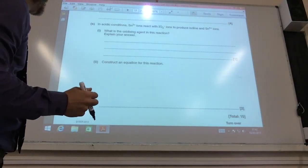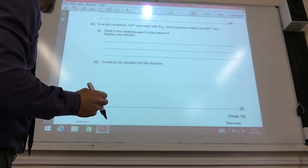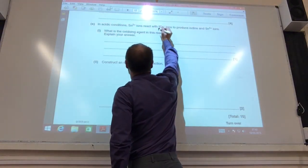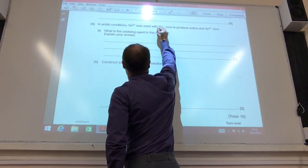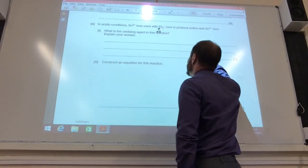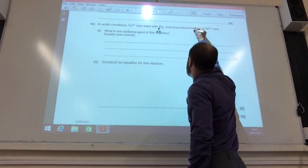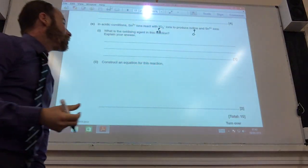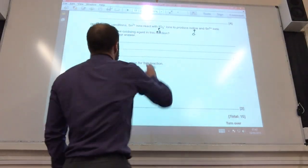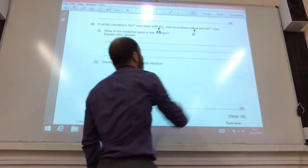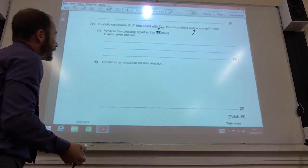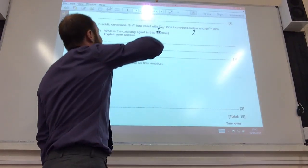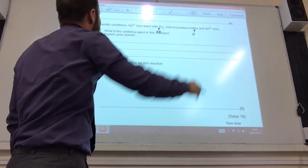Okay, so first of all, in acid conditions, tin 2 plus reacts with iodine ions, which is iodine and tin 4. What's the oxidising agent? Well, the iodate ion is going to be the oxidising agent. The oxidation number of iodine is plus 5, and iodine itself is 0. So iodine has obviously been reduced because it's gained electrons from the tin 2 plus becoming tin 4 plus. And you can see the tin's actually been oxidised. So it's the iodate ions that will be the oxidising agent. They have been reduced.